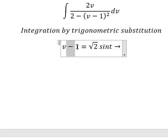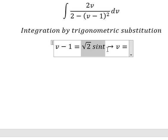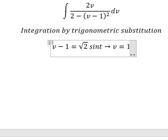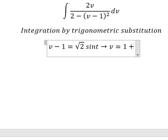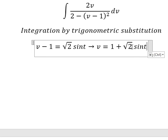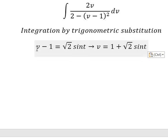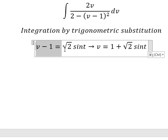So we put the negative 1 to the right. Next, we need to take the derivative of both sides for this substitution.